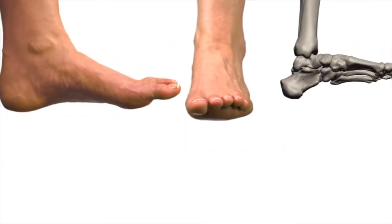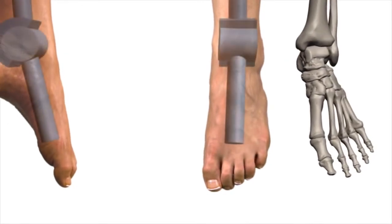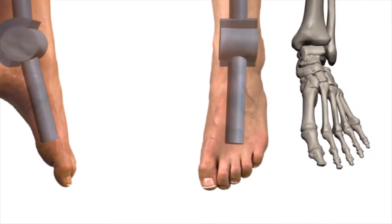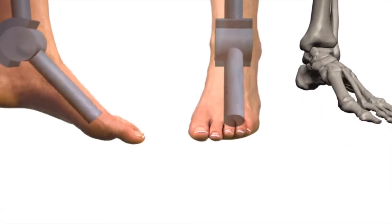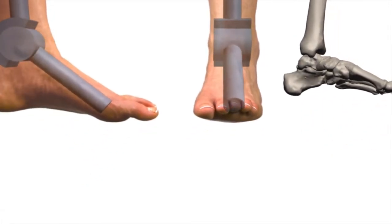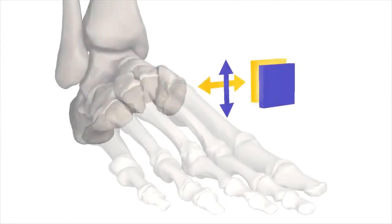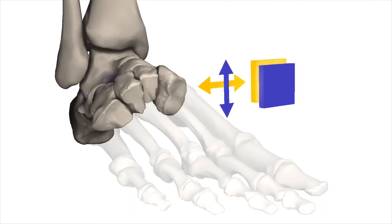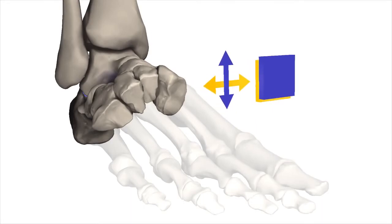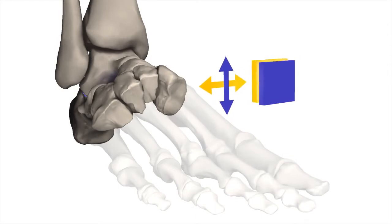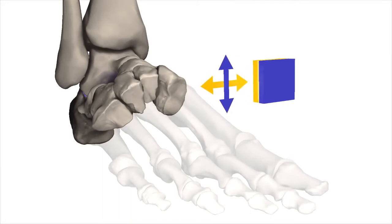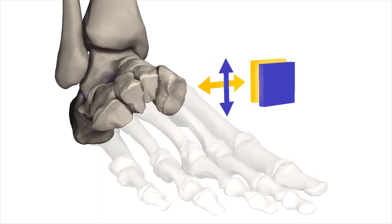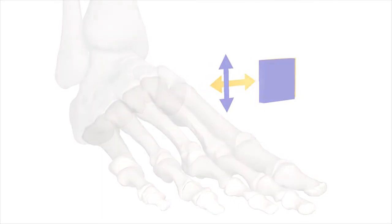Here we have a foot demonstrating plantar flexion and dorsiflexion. The hinge joint allows movement in one plane; an example of a hinge joint is the ankle. The function of the gliding joint allows movement from side to side or back and forth, with no twisting or rotary motion. As you can see in the hind foot, the motion illustrated in the tarsal bones — more specifically the intertarsal joint — the movement between the navicular, the intermediate cuneiform, and lateral cuneiform produces a gliding motion, including plantar, dorsal, lateral, and medial directions.